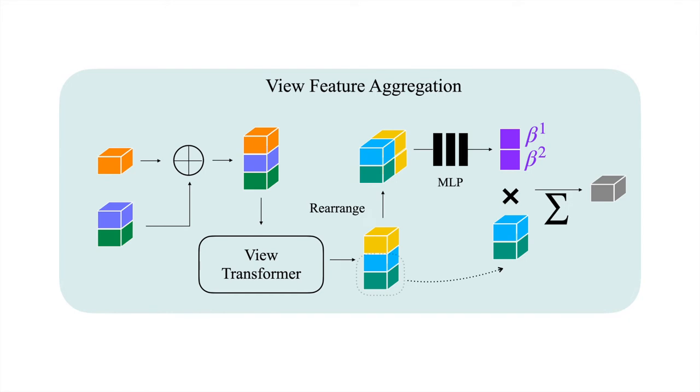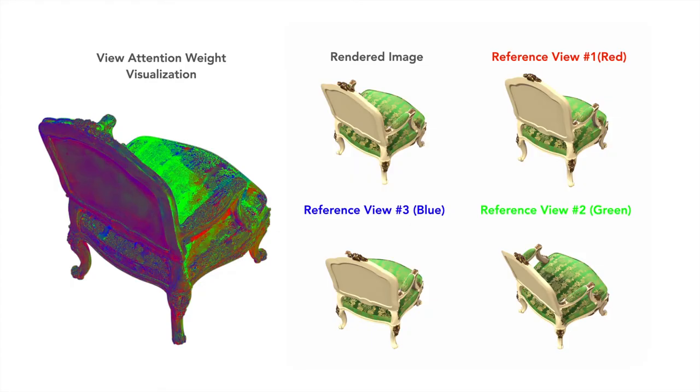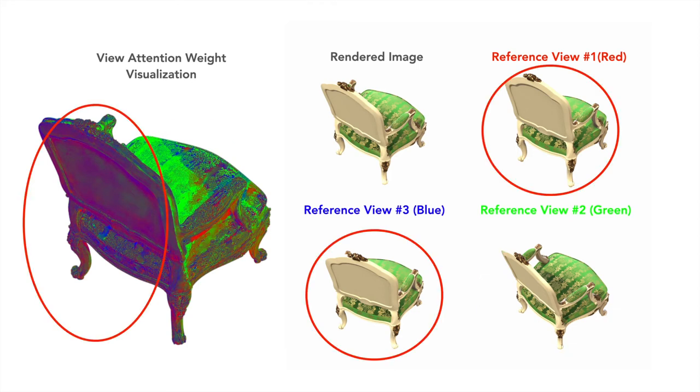Visualizing the attention weights beta show the occlusion reasoning capability of the model. Here, we show an example of image rendered from the chair scene with the corresponding weights beta of the three views represented as RGB channels. We observe that when rendering the cushion, the model gives higher weight to the reference view in which the region is mostly visible. Similarly, when rendering the back of the chair, the model devotes equal attention to views in which the regions are equally visible.